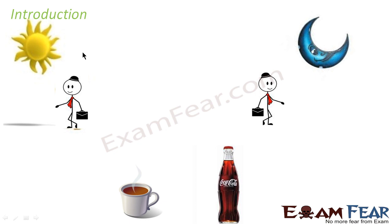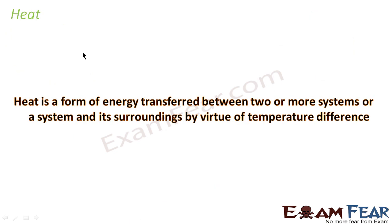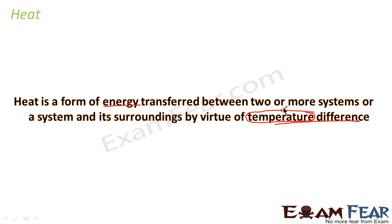Now let us look at the definition of heat. Heat is a form of energy transferred between two or more systems, or between a system and its surroundings, by virtue of a temperature difference. This definition tells us that heat is a form of energy which is transferred between systems due to temperature difference. Since temperature difference plays a very important role here, let us first understand what temperature is.